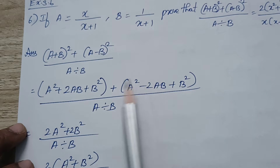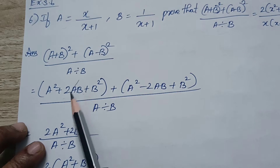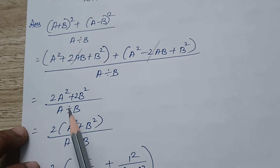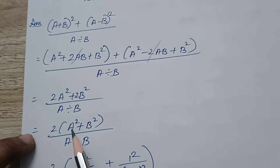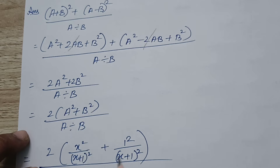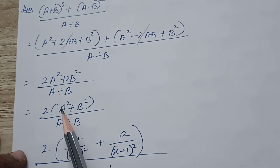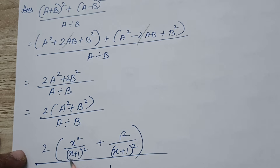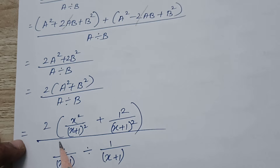If we open the bracket and simplify: A square plus A square is 2A square, B square plus B square is 2B square. Plus 2AB minus 2AB cancel out. So we get 2A square plus 2B square divided by A divided by B. Now substitute: A square is X by X plus 1 the whole square, equals X square by X plus 1 the whole square. B square value: B is 1 by X plus 1, so B square is 1 by X plus 1 the whole square. Divided by A divided by B.